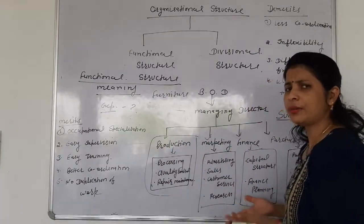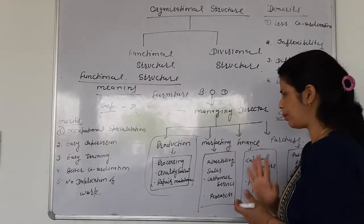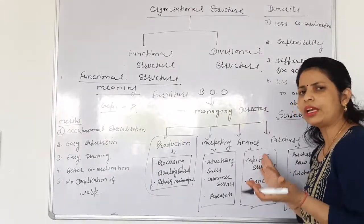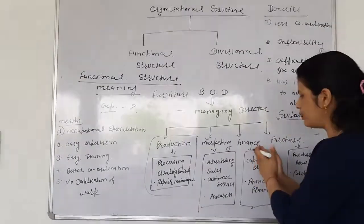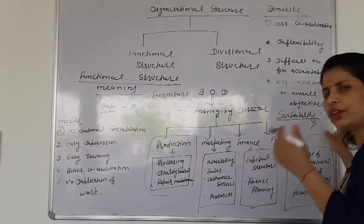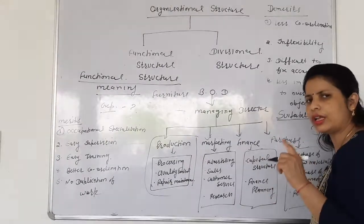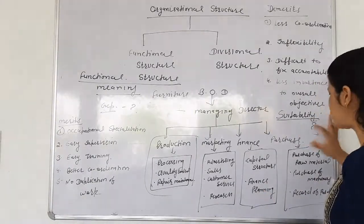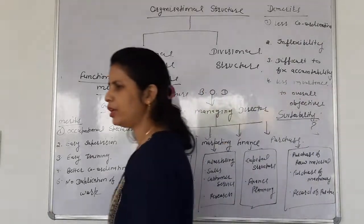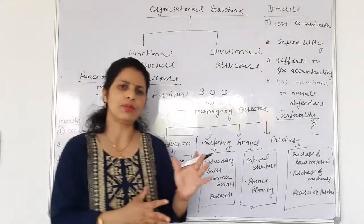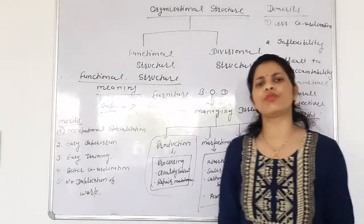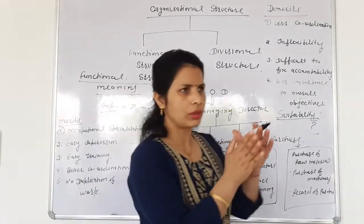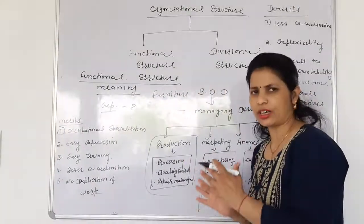When we produce furniture, we have a separate department for production and its own activity. If we do marketing, we have a different department for marketing. We also require raw material or machines, so we have a different department for purchasing. It means that when we produce any single product, we perform various types of activities, and for performing every activity, we create a separate department.